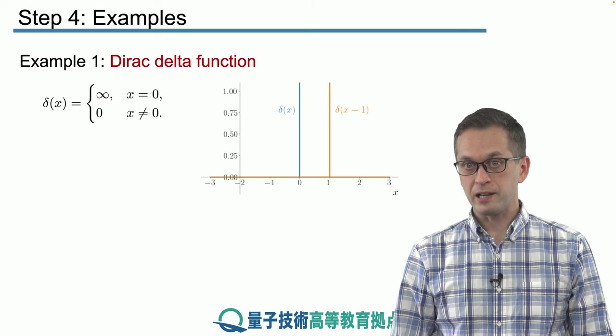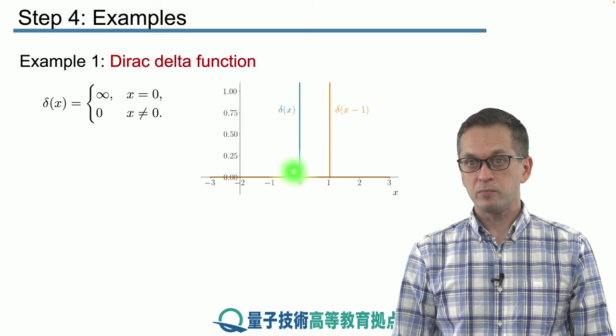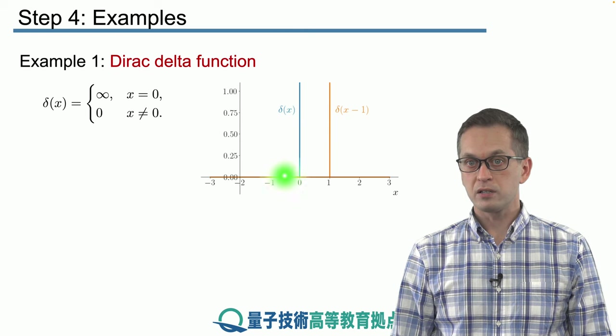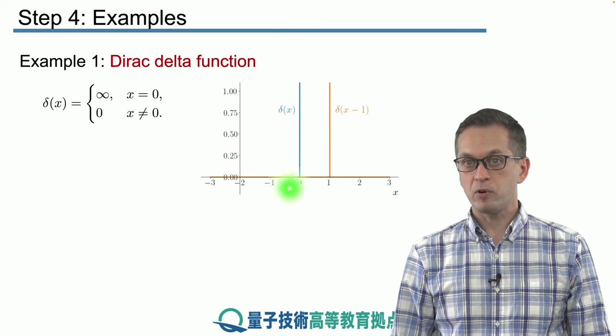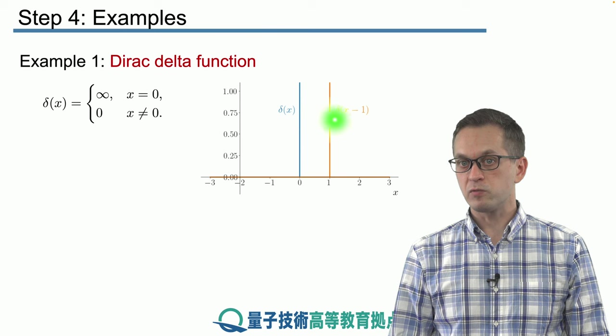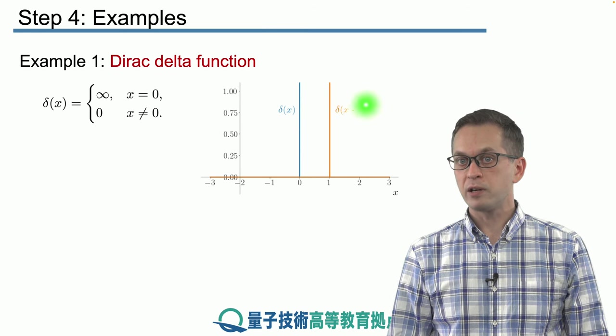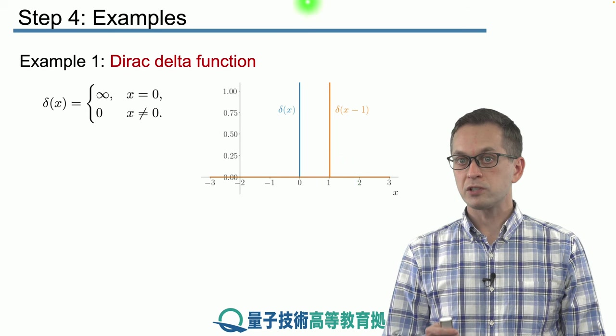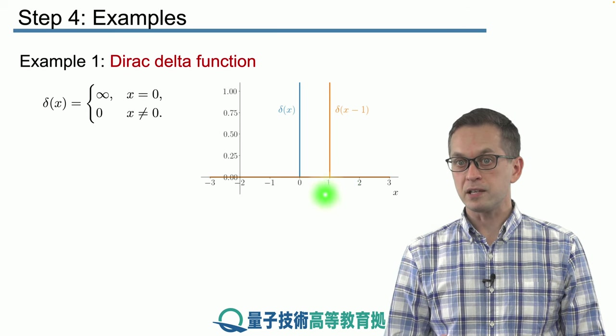And it looks basically like this. Here with the blue line we see that δ(x) is everywhere 0 except at the point x equals 0 where it shoots off to infinity. We can also have δ(x - 1). So in that case the function goes to infinity at x equals 1.